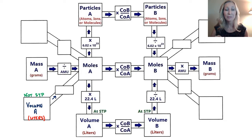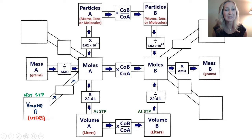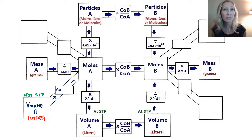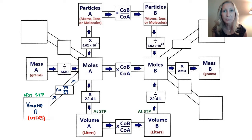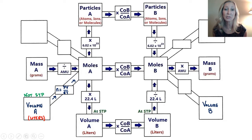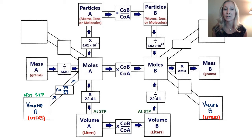If we're given a volume and we need to find the number of moles of that gas, we will rearrange the ideal gas law. The number of moles n equals PV over RT. So if you're given a volume, a temperature, and a pressure, you plug them all into this formula with that constant and out come the moles.